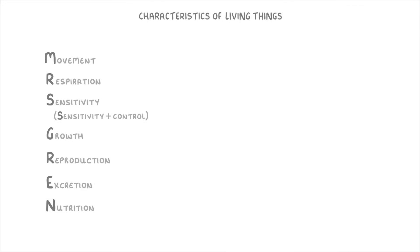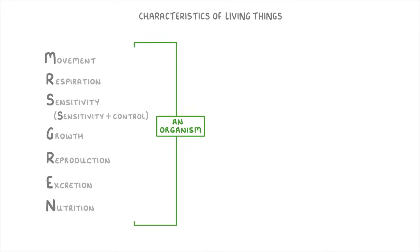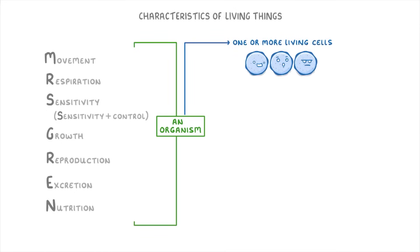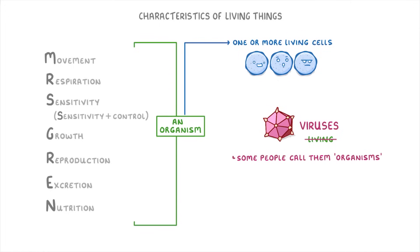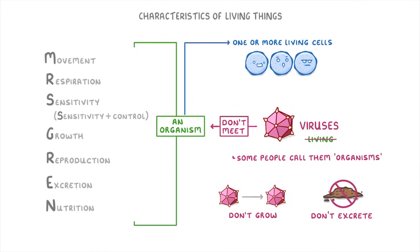These are the seven features that all living things have in common, and anything that meets all of these criteria can be called an organism. One other thing all living organisms have in common is that they're made up of one or more cells, which we'll look at in another video. Also remember that viruses don't actually count as living things — even though some people call them organisms, they don't meet the seven requirements; for example, they don't grow over time and they don't excrete waste.